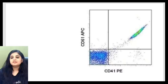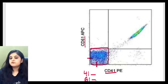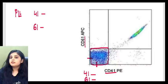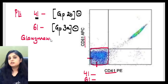Now look at the next flow cytometry plot: the majority of cells sit in a quadrant that is negative for CD41 and negative for CD61. CD41 is also known as GP2B and CD61 as GP3A. So GP2B and GP3A are absent. If platelets are not exhibiting CD41 and CD61, the disorder is Glanzmann thrombasthenia — a bleeding disorder characterized by absence of GP2B and GP3A.